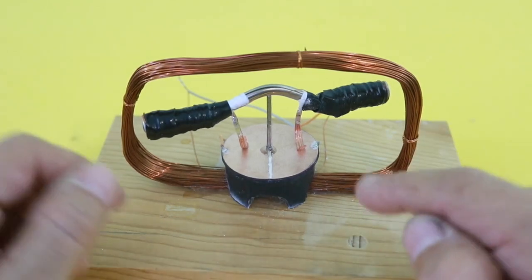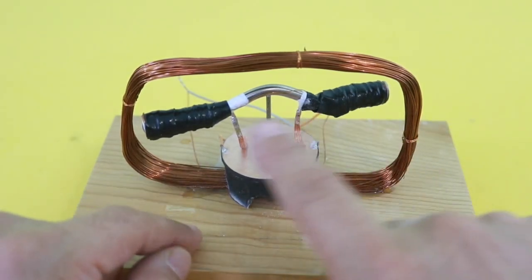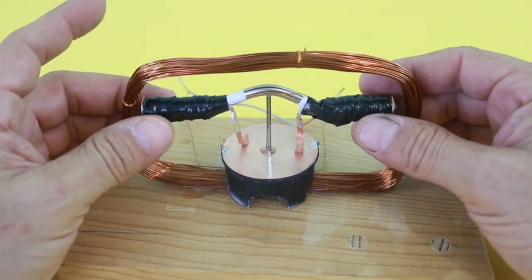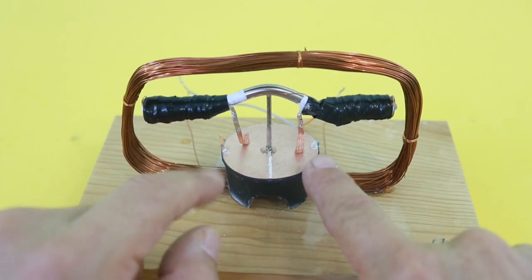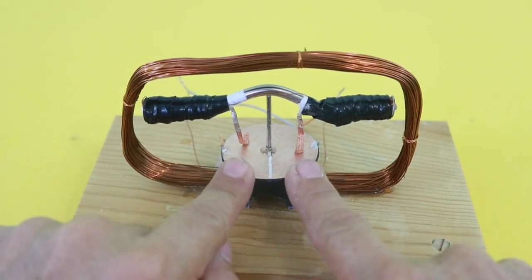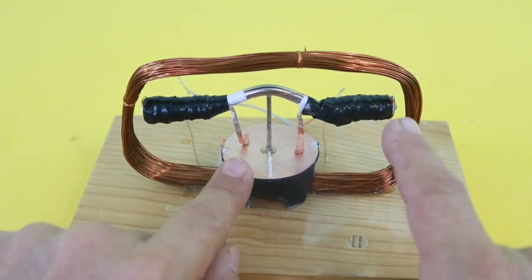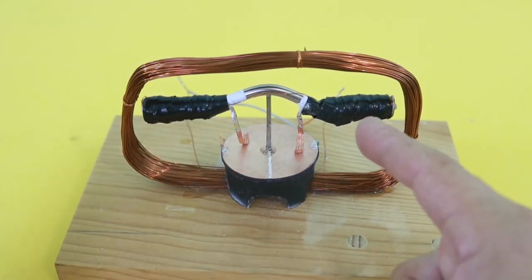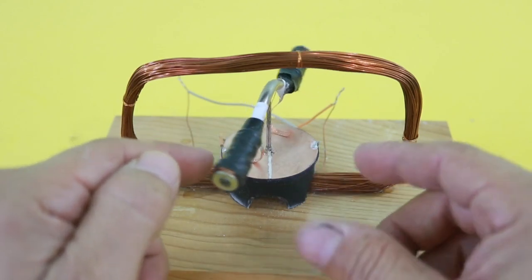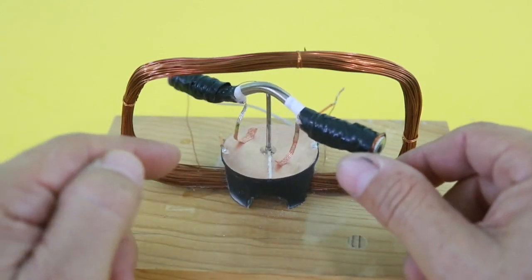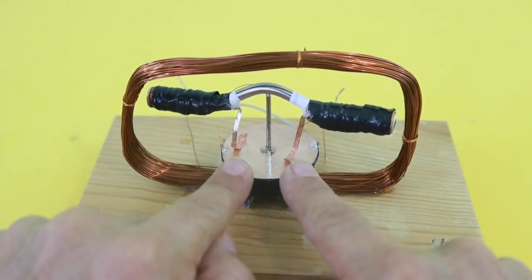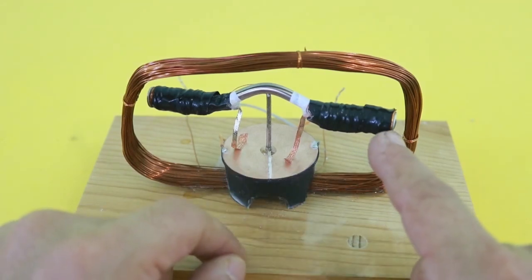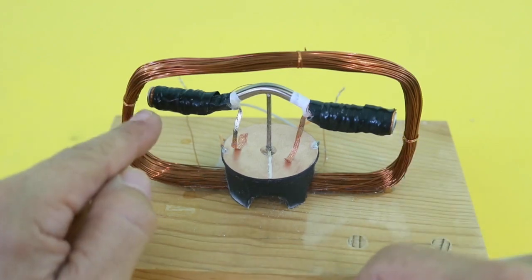On the other side, the rotor has a polarity that is constantly changing. For example, when it is in this position the brushes make contact with the commutator and we can have here a north pole and here a south pole. But when the rotor moves 180 degrees, now we have the polarity inverted. Therefore, what was a north is now a south and vice versa.